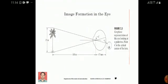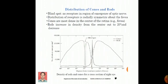Next, you may observe the distribution of receptors is radially symmetric about the fovea. Cones are most dense in the center part of the retina. Rods increase in density from the center out to 20 degrees and then decrease. This entire picture shows the distribution of cones and rods.